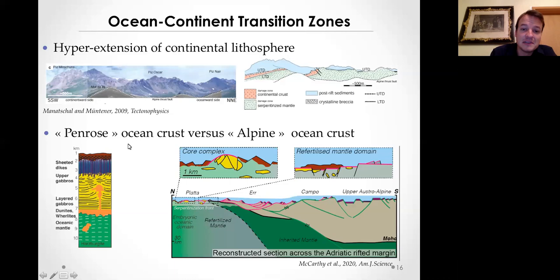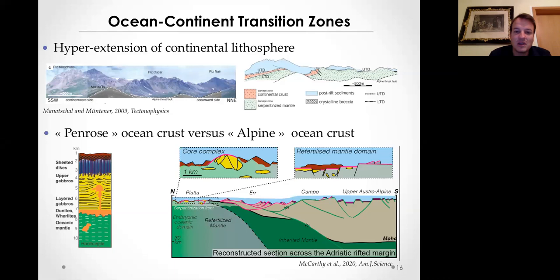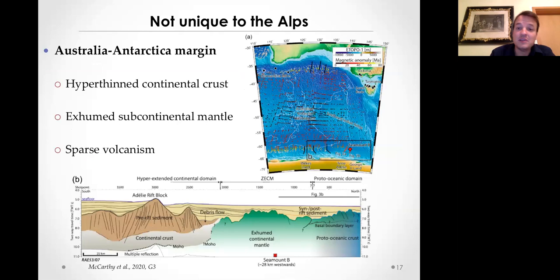This is fundamentally different from what's typically known as an ophiolite - the Penrose-type ophiolite - where you typically have harzburgites, layered gabbros, isotropic gabbros, sheeted dike complexes, and pillow lavas. In the Alps, ophiolites are dominated by exhumed mantle that's been serpentinized and thinned-out continental crust - an environment which is very close to the continental margin.